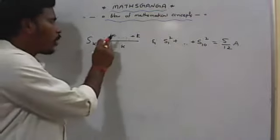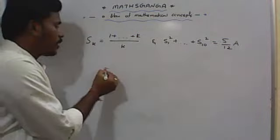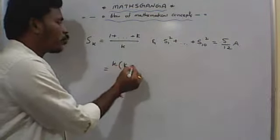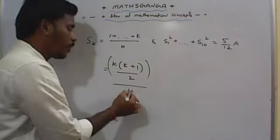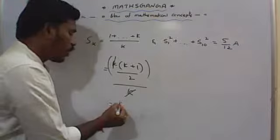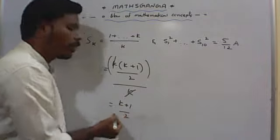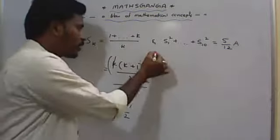It is very clear that 1 plus and so on plus k is ultimately k(k+1)/2. This total thing is again divided by k, so k will get cancelled. What is Sk value is (k+1)/2. I have that Sk as (k+1)/2.